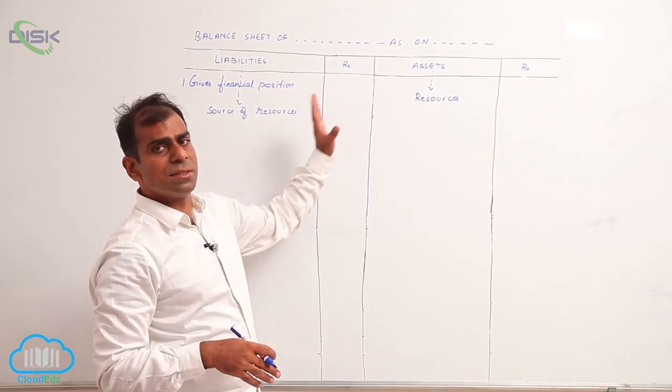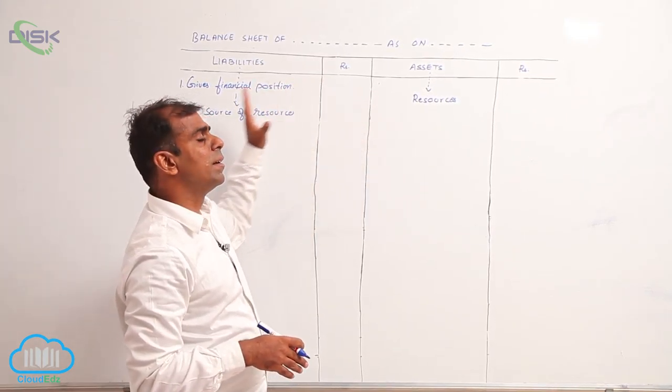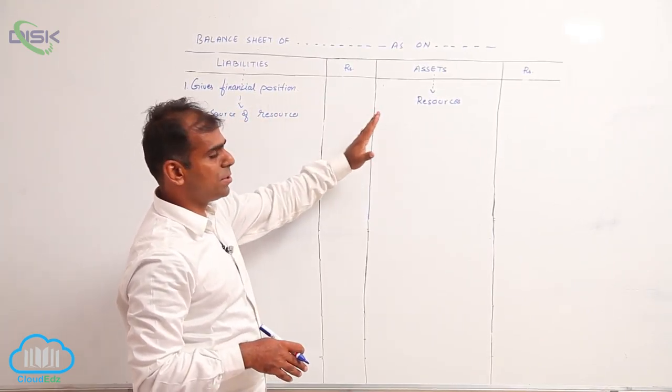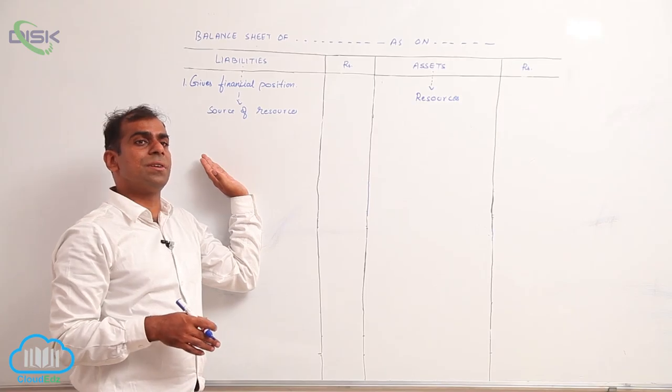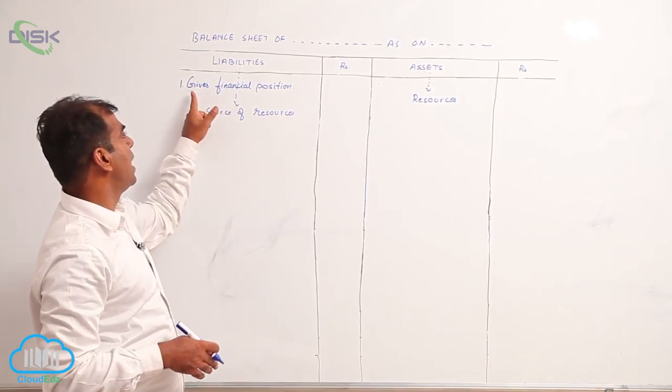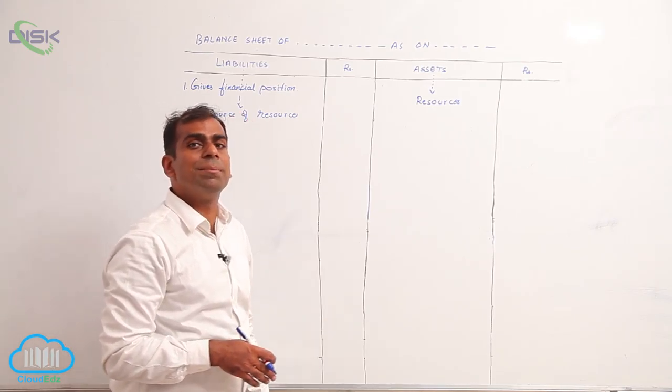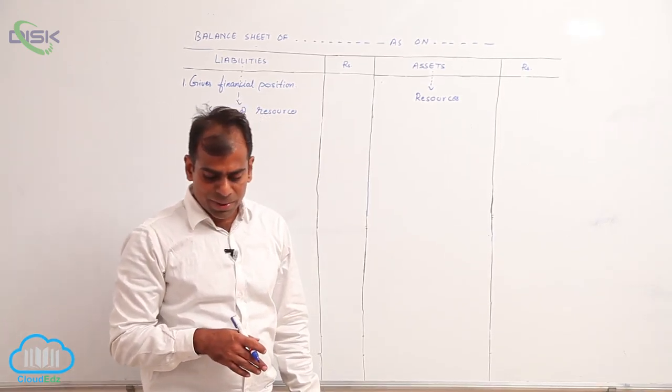The combination of these resources or sources on a given date or the composition of resources and their sources on a given date is called as financial position. So, balance sheet helps you to determine your financial position.